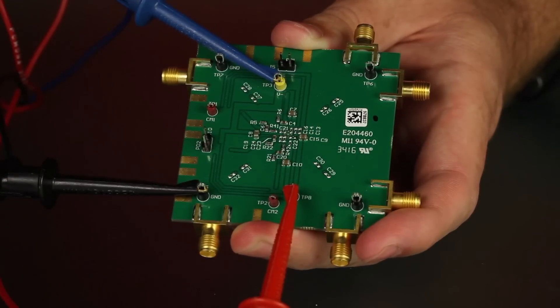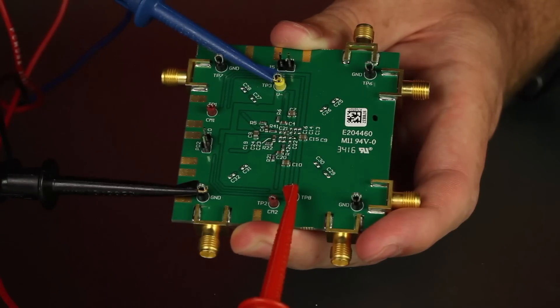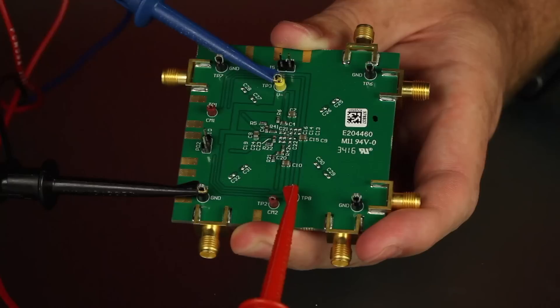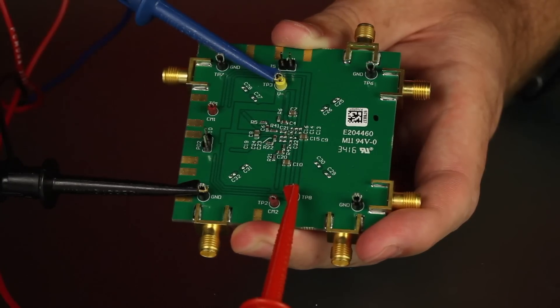The output common mode voltage will default to mid-supply if the red VOCM connector is left floating. Regardless of the configuration, the inputs and outputs must be biased per the THS4552 datasheet specifications for proper operation.